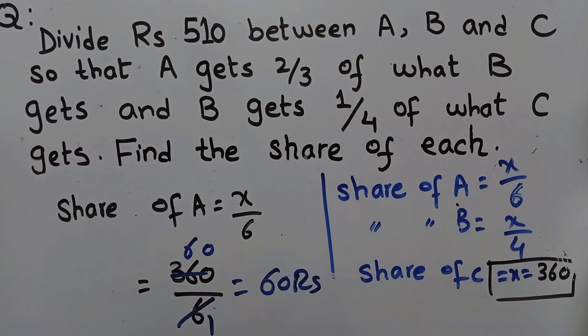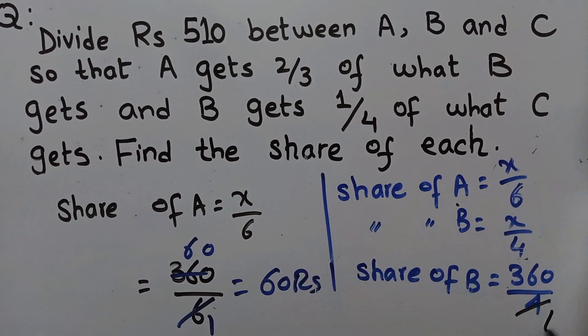Now we'll find B's share. We divide 360 by 4. 4 times 9 is 36, so the share is 90 Rupees for B.